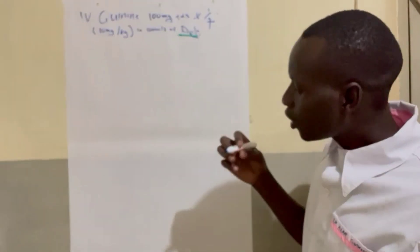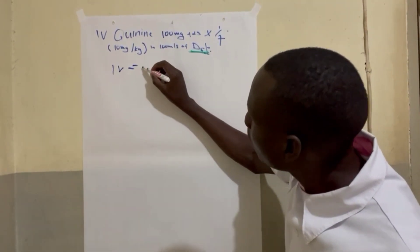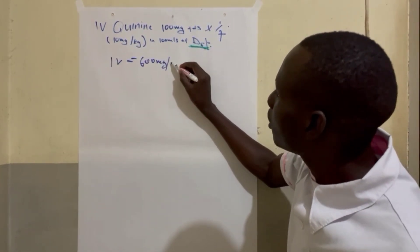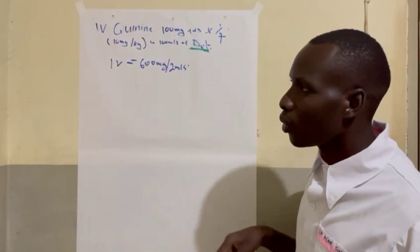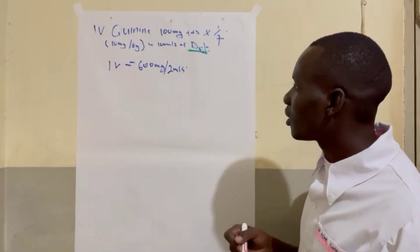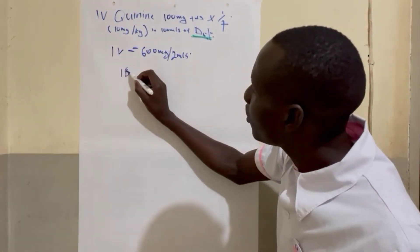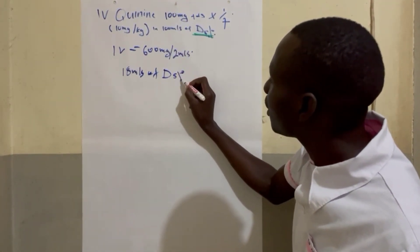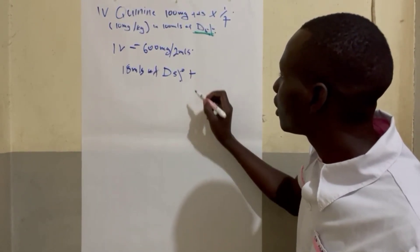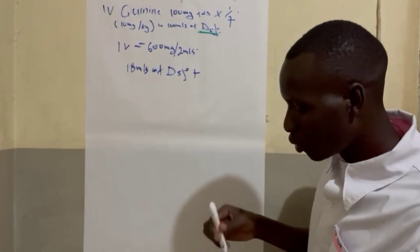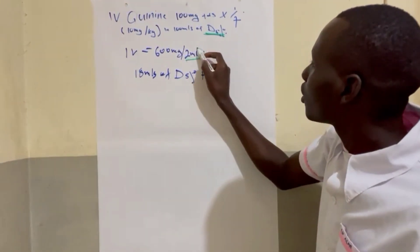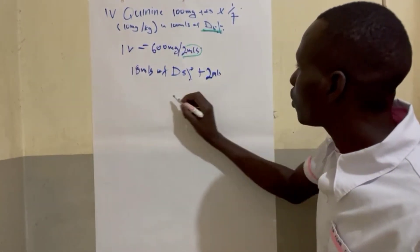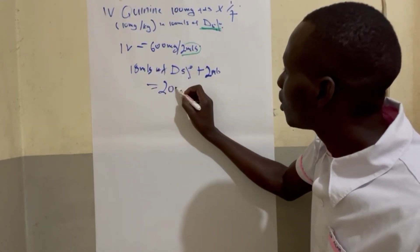So our quinine is made, is equal to 600mg in 2ml. We are going to first dilute this with 18ml of dextrose 5%, which means we are going to aspirate 18ml of dextrose 5%. Then we are going to add this 2ml. These 2ml of quinine plus 18ml which will give us 20ml.